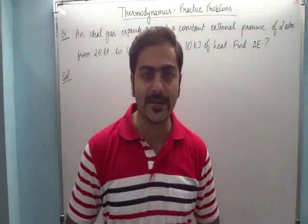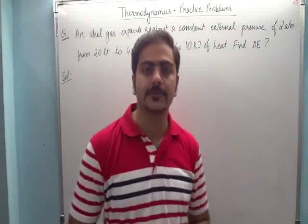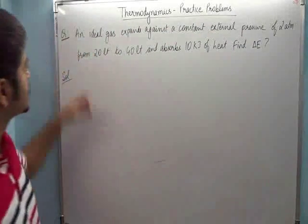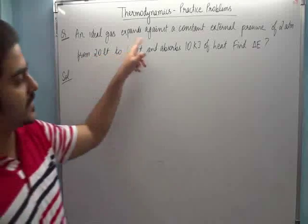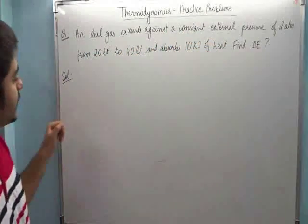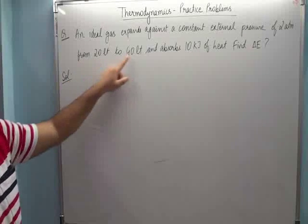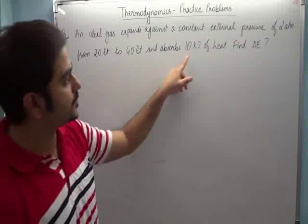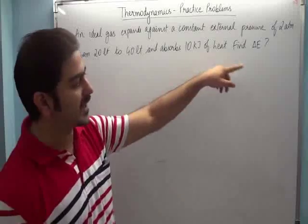Hi friends, let's do one more practice problem on thermodynamics. The question is: an ideal gas expands against a constant external pressure of 2 atmospheres from 20 liters to 40 liters and absorbs 10 kilojoules of heat. Find delta E.